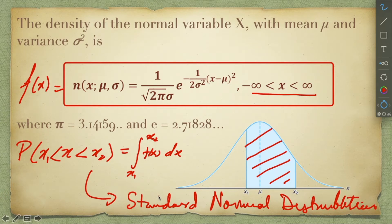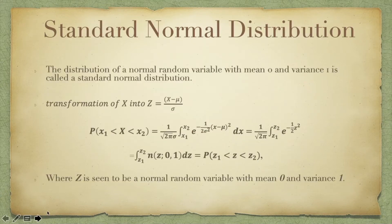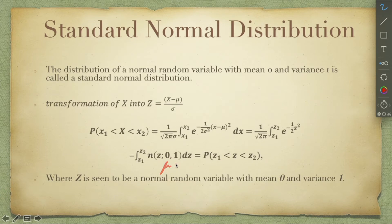Therefore we take the help of the standard normal distribution. This standard normal distribution is nothing but a normal distribution having mean as 0 and variance as 1 — that is, mu equals 0 and variance equals 1.